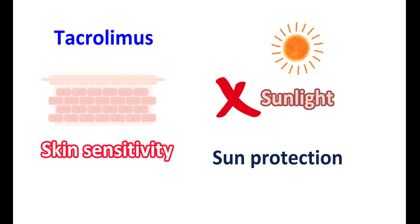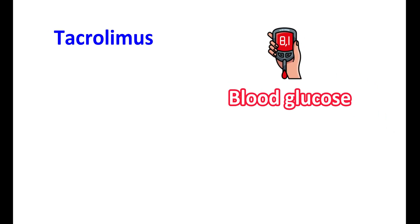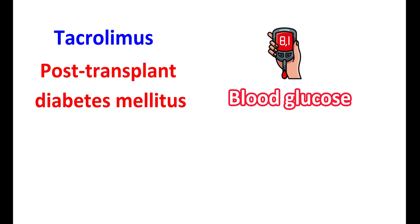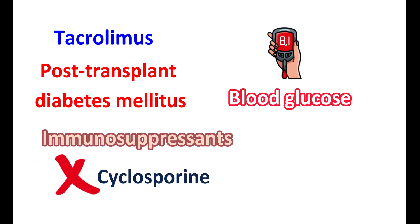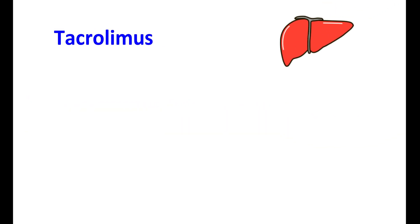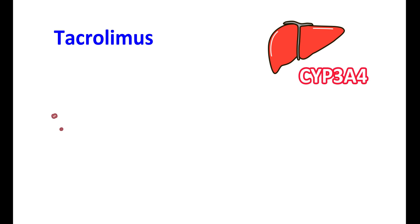Effect on blood glucose: Tacrolimus can increase blood glucose, particularly after transplantation. This condition is called post-transplant diabetes mellitus. Blood glucose should be frequently monitored after transplantation. This condition may be further worsened when tacrolimus is used along with other immunosuppressants that also increase blood glucose levels, such as cyclosporine, another calcineurin inhibitor. Cyclosporine should be discontinued 20 hours before starting tacrolimus.